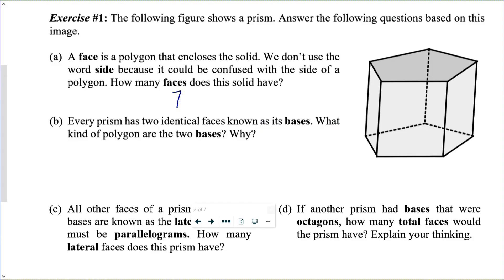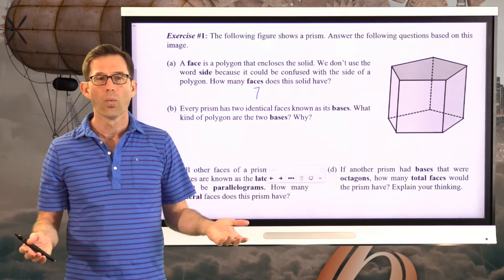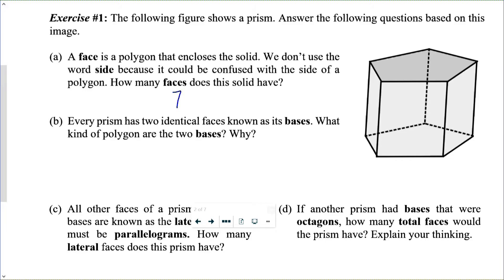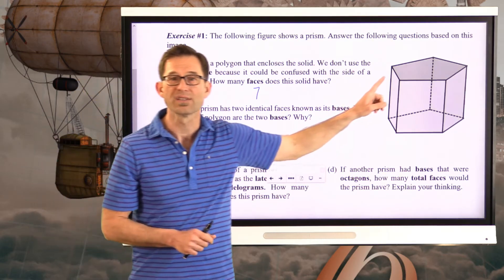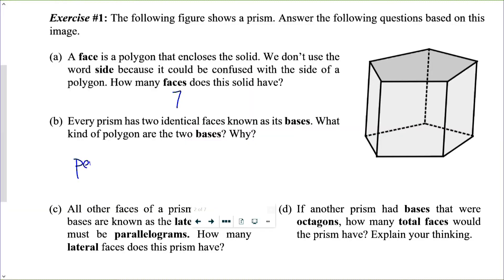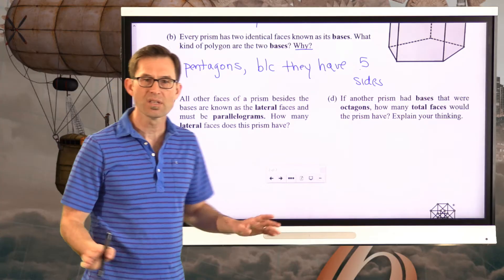Letter B: every prism has two identical faces known as its bases. What kind of polygon are the two bases and why? Each one of those bases has one, two, three, four, five sides — so the bases are pentagons, because they have five sides.